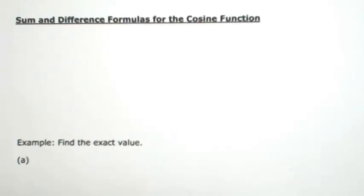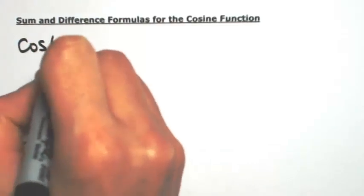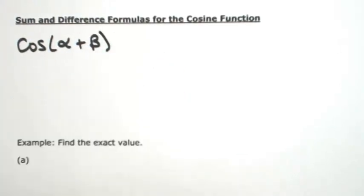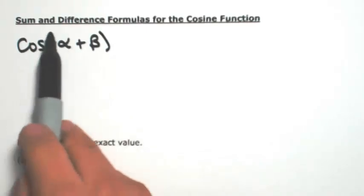Suppose you want to find the cosine of the sum or difference of two angles. So if I have the cosine of, let's call them alpha and beta, so the cosine of alpha plus beta, the cosine does not distribute inside.